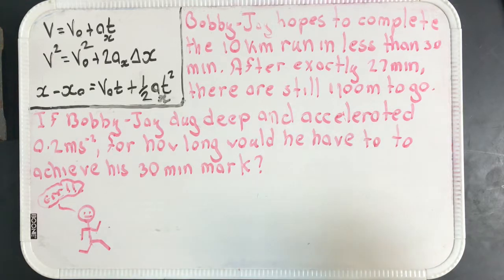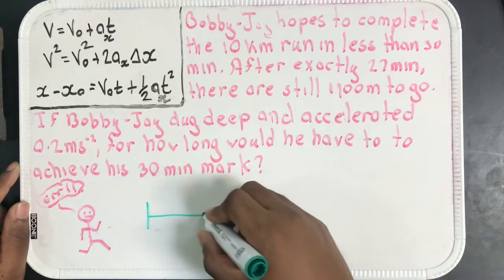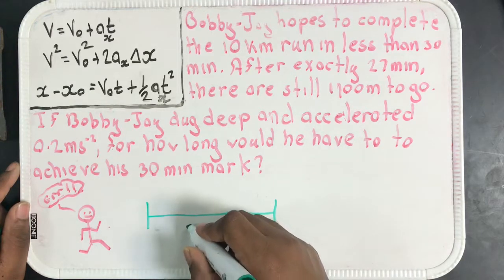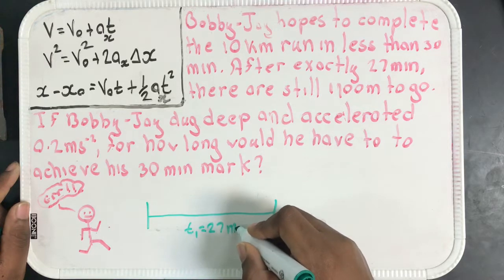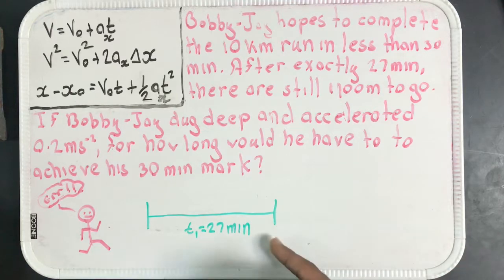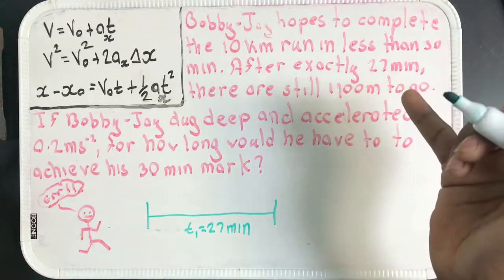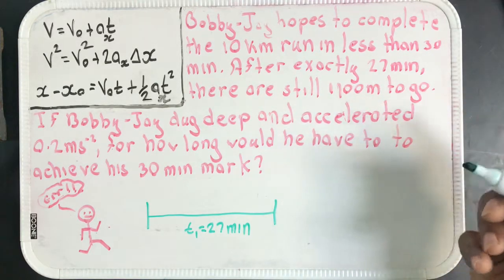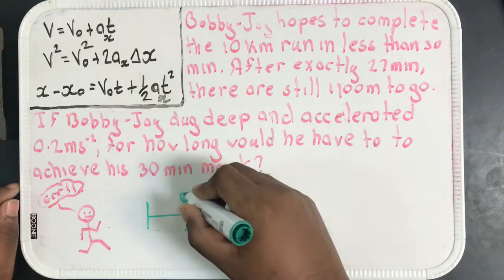So if we look at the first part, there's a big question: what's happening before 27 minutes? I'll call this t1. So 27 minutes, this is what he does - he runs some distance. What is this distance? Well if there are 1100 meters left after 27 minutes then he must have run 10,000 minus 1100, which gives us 8900 meters.